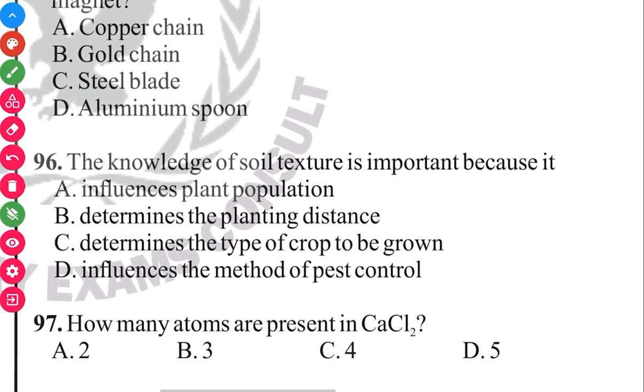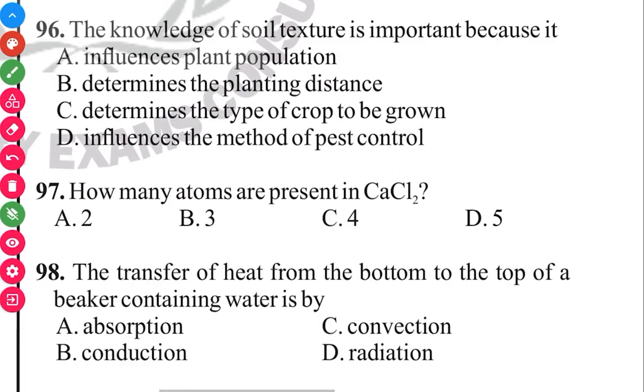Question 97. How many atoms are present in calcium chloride CaCl2? The answer in 3, 2, 1, it's B, it's 3 atoms. One atom here, 2 atoms here.